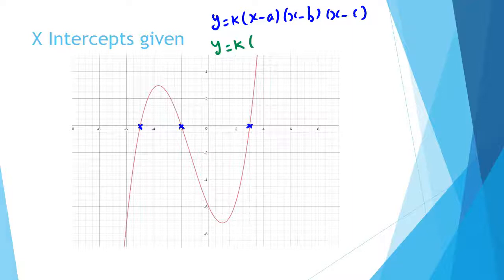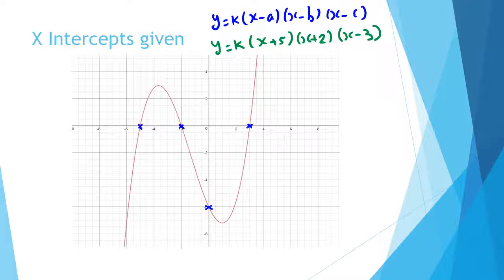We write y equals k times (x plus 5) — because negative negative is positive — times (x plus 2) times (x minus 3). Now we need to find the k value, so we need to use another point that the graph passes through. We're lucky enough to have the point (0, negative 6).